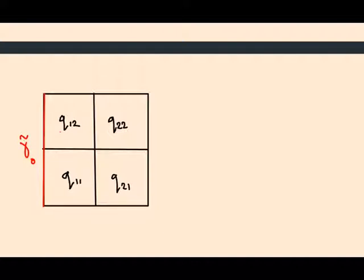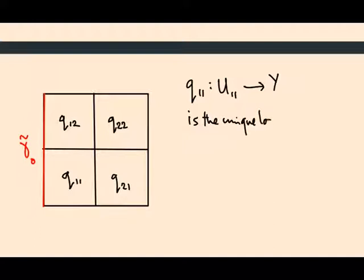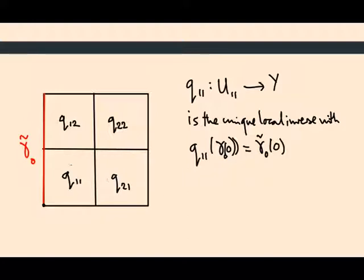And that actually tells me which cues to use. So what is q_11? Well, q_11 which goes from u_11 to y is the unique local inverse with q_11 of this point, so I guess that's gamma_0(0), equal to gamma tilde 0(0). So there's only one local inverse I can pick over this open set which sends the base point of the loop to the initial point of the lifted path.